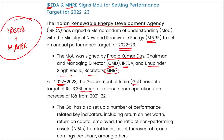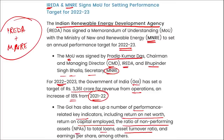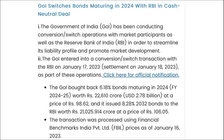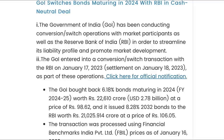For the year 2022-23, the Government of India has set a target of ₹3,361 crore for revenue from operations - an increase of 18% from the previous year. Key performance indicators set include return on net worth, return on capital employed, the ratio of non-performing assets to total loans, assets turnover ratio, and earnings per share. IREDA's Chairman and Managing Director is Pradeep Kumar Das; IREDA was established in 1987 and has the motto 'Energy Forever.'